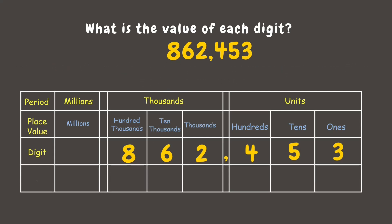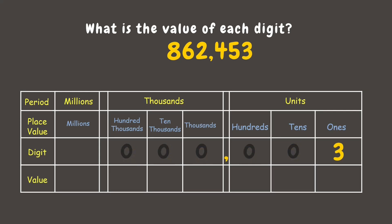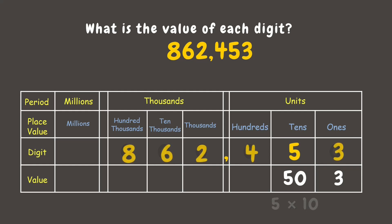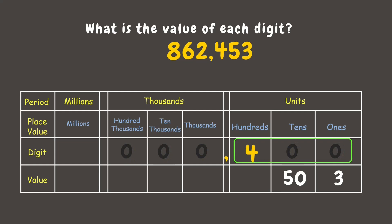Now let's try the first one. What is the value of three? Make the other digits zero, and you get three — which also means three times one, since it is in the ones place. Next, what is the value of five? It is 50, which means 5 times 10. For digit four, the value is 400, which also means 4 times 100.